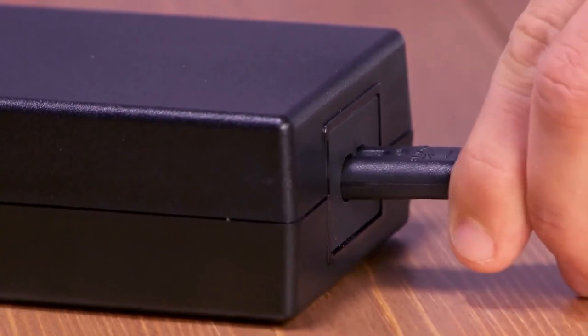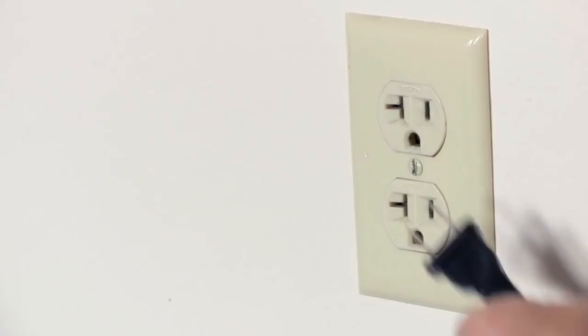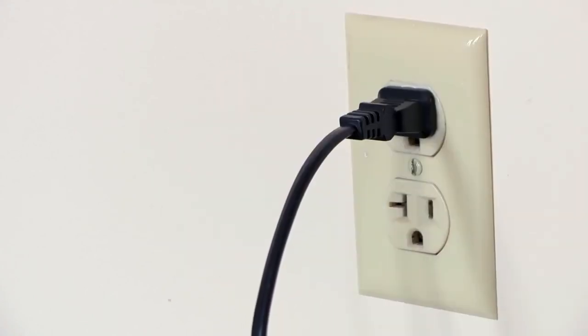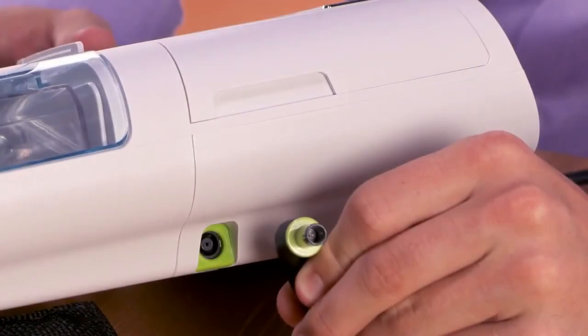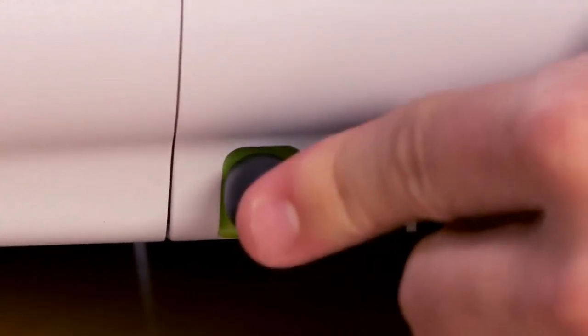For power, insert the socket end of the AC power cord into the power supply. Plug the AC power cord into an electrical outlet. Do not use an extension cord or an outlet controlled by a switch. Connect the power supply cord into the green power inlet on the side of the device. Ensure that the plug is fully inserted.